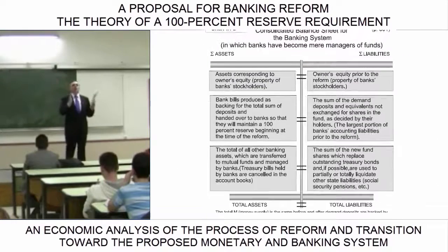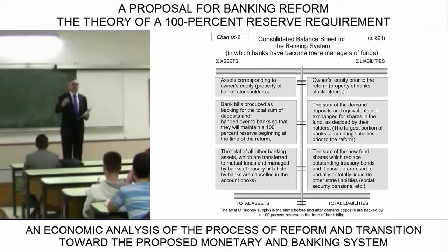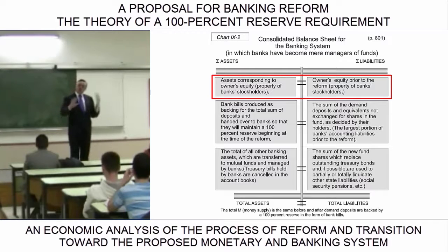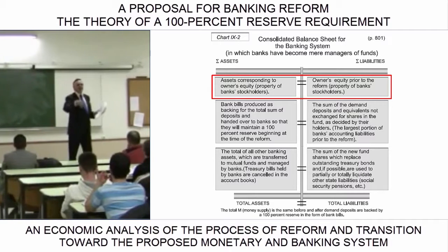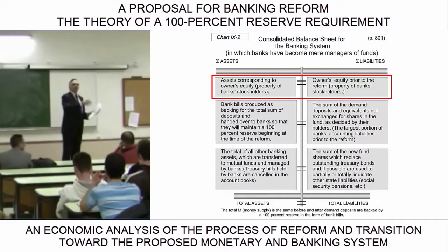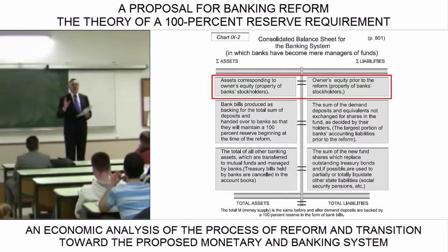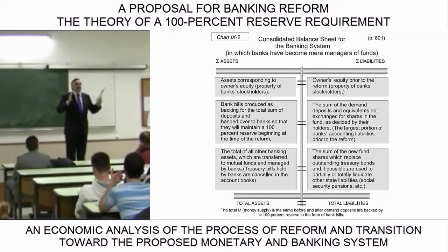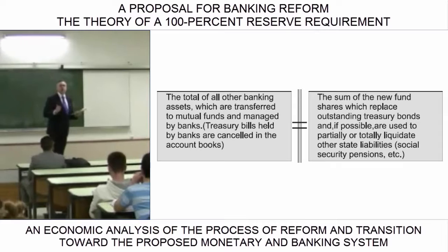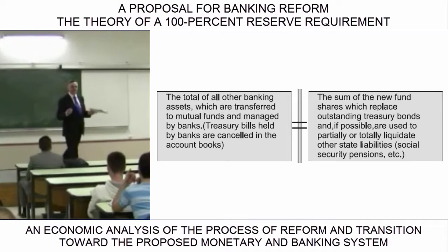Now, the question is: what would happen to the assets currently held by the banking system as collateral for deposits — the loans banks grant, both toxic and non-toxic assets? Apart from those which correspond to owners' equity — I respect private property and do not wish to touch even one euro of what belongs to bank stockholders, though much could be said about this, since over the centuries they have profited from seigniorage by operating with a fractional reserve — without touching even one euro of what belongs to stockholders, I propose that all of banks' freed assets that are currently counterbalancing deposits, and would no longer be necessary since deposits would be backed 100% by newly created money, be used to establish a set of mutual funds to be managed by the banking system.